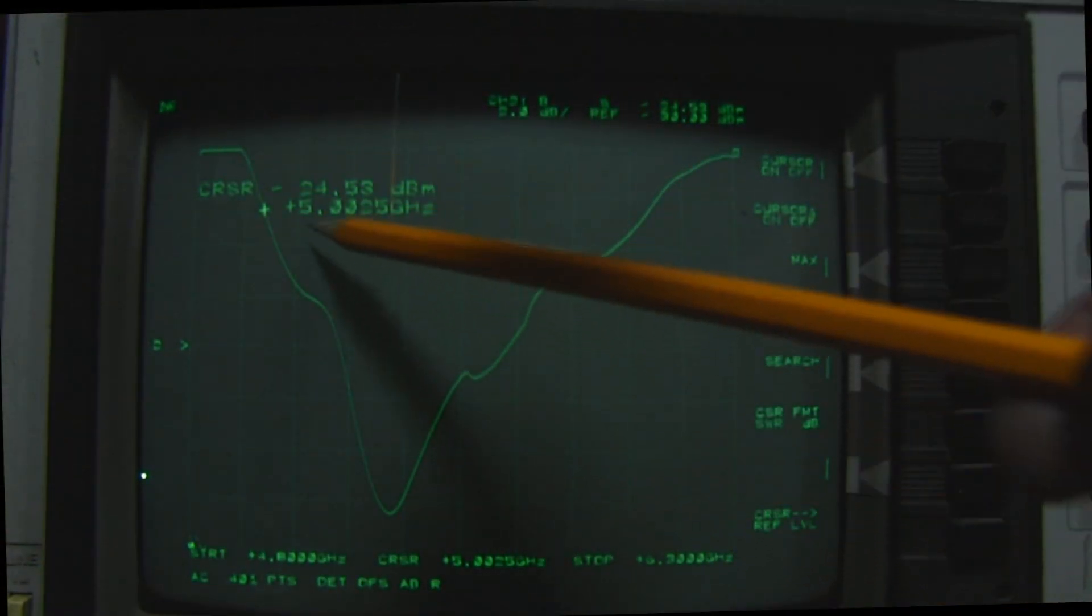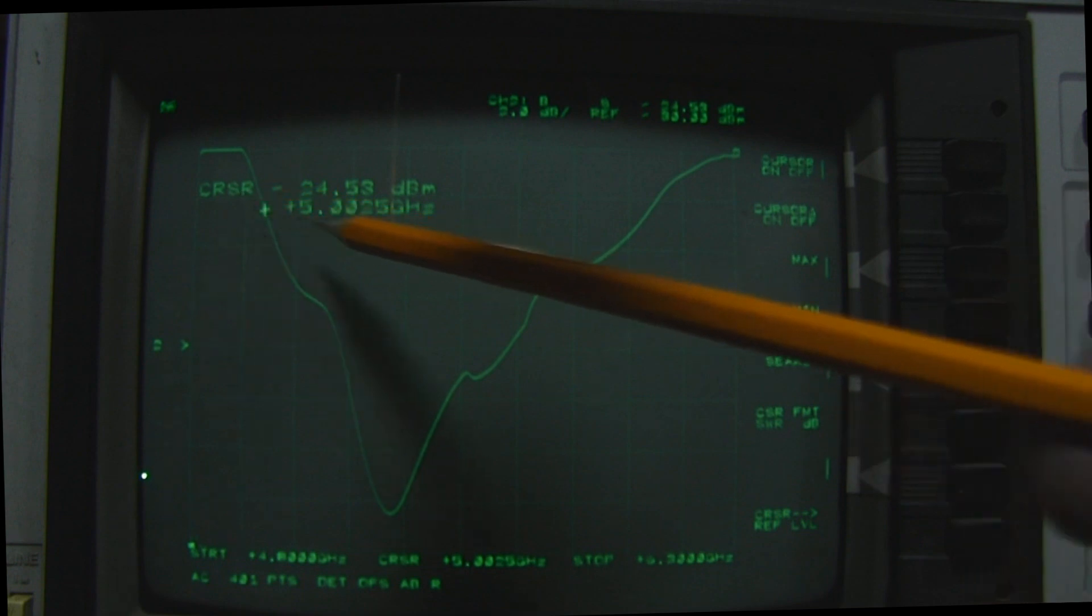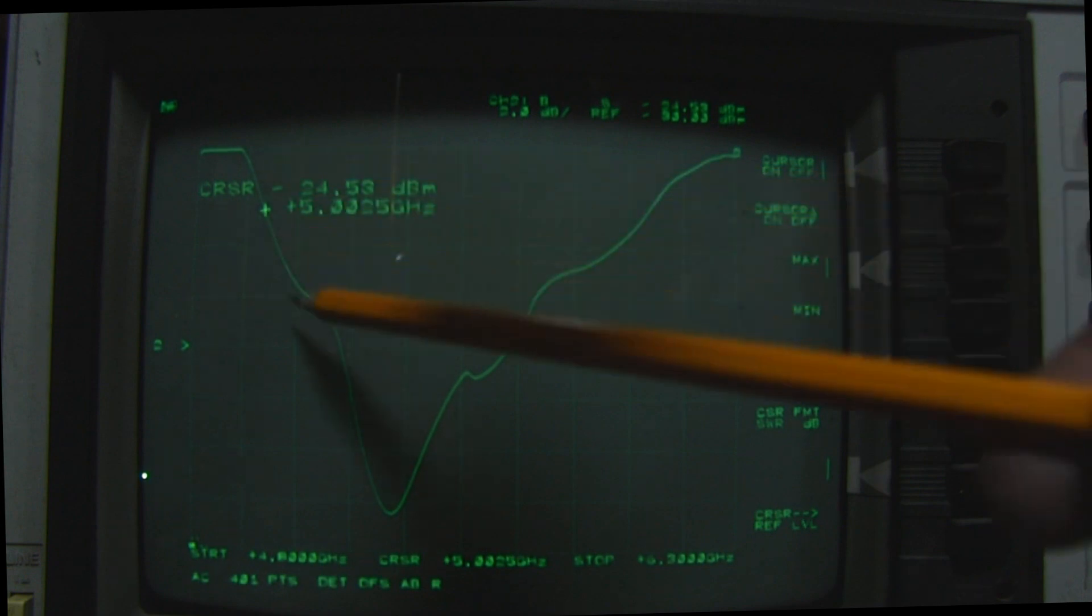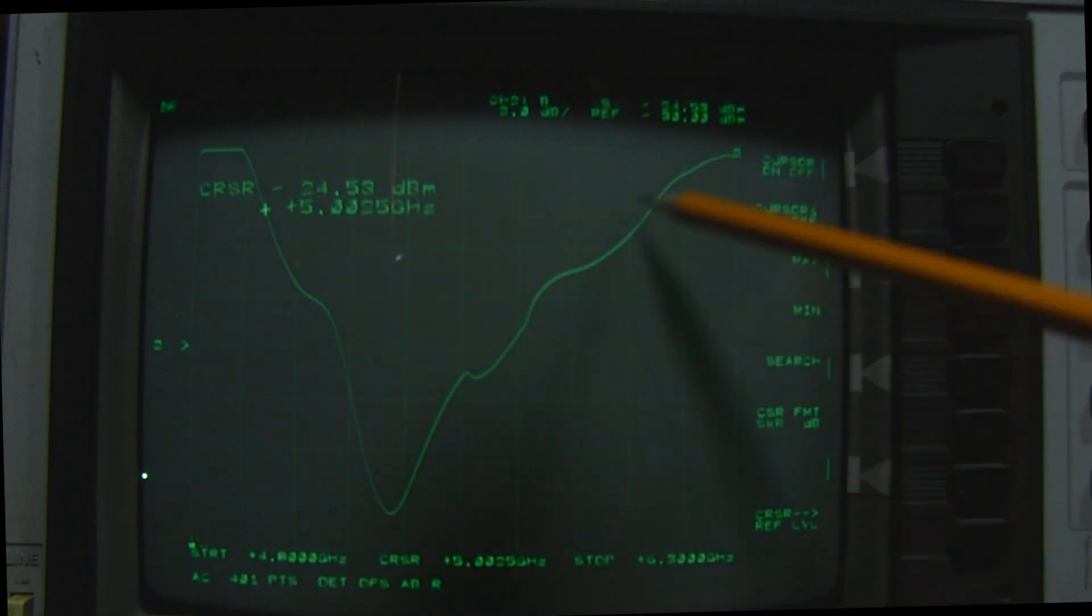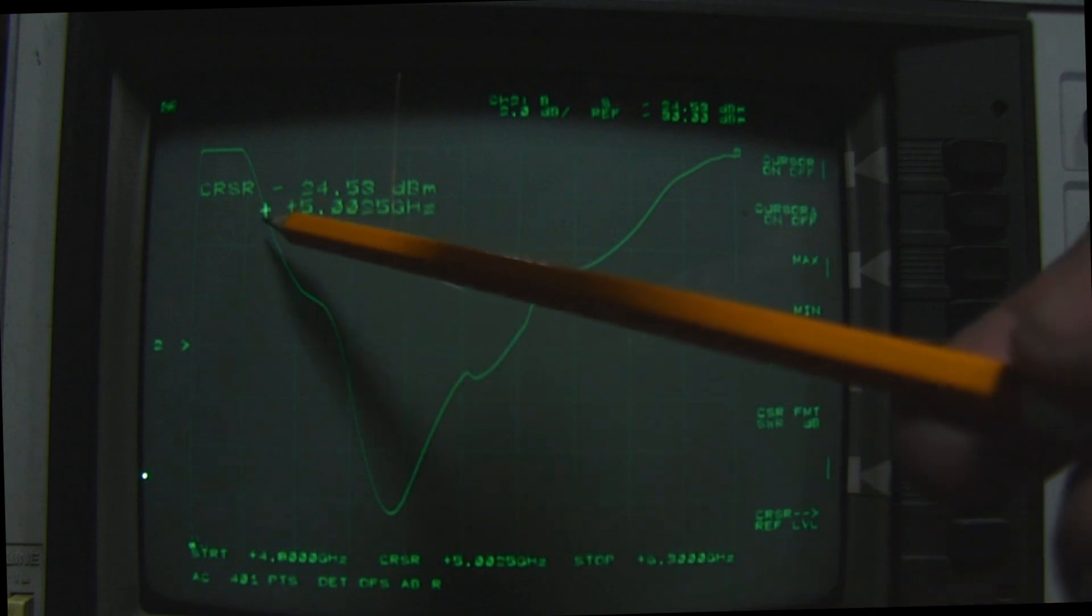Here's the output on the network analyzer. I've got the cursor on 5 gigahertz here. I'm scanning from 4.8 gigahertz up to 6.3 gigahertz rather than looking at the entire spectrum at once. It's better if we can zoom in.